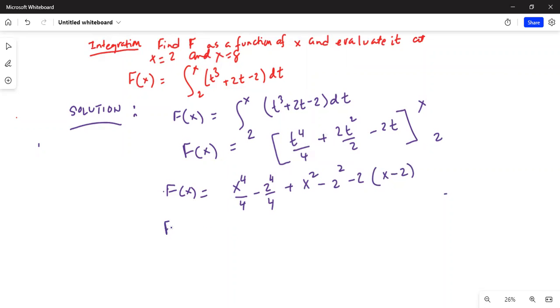And inside parenthesis x minus 2. So f of x will be equal to x⁴ by 4 minus 2 to the power of 4 is 16. So 16 divided by 4 is 4, plus x square minus 4x minus 4.